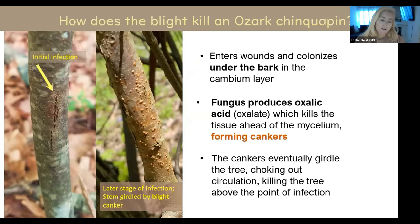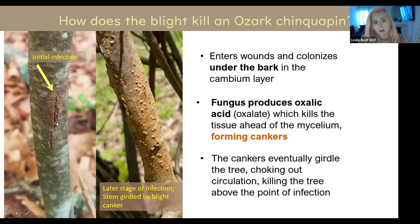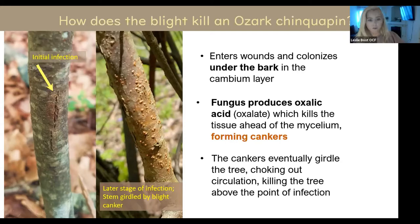It's a canker disease - it causes these cankers. In these photos, you can see I was lucky enough to find a tree out in the wild that had an initial infection going. An insect or something causes a small abrasion on the tree, maybe a deer rubs it. The fungus enters through that little wound and starts to colonize under the bark, forming a canker. Those cankers coalesce until they wrap completely around the stem and completely girdle or choke it out.